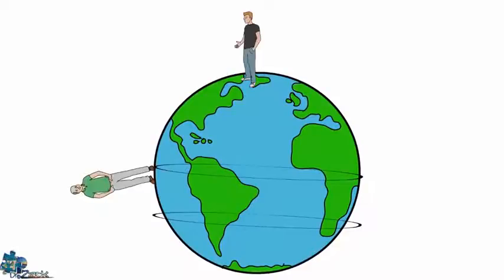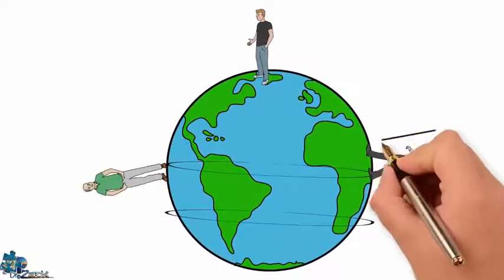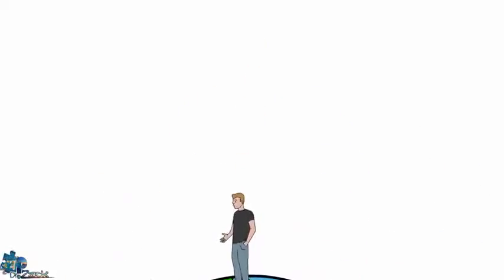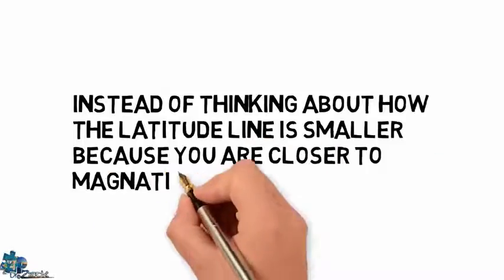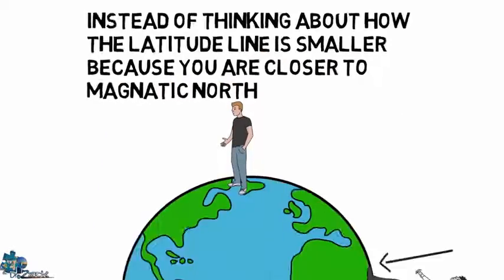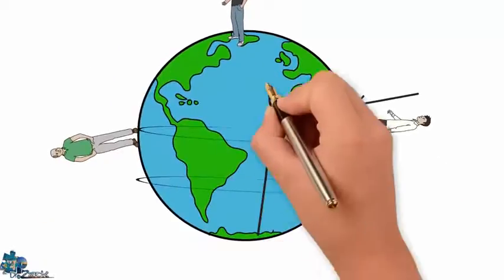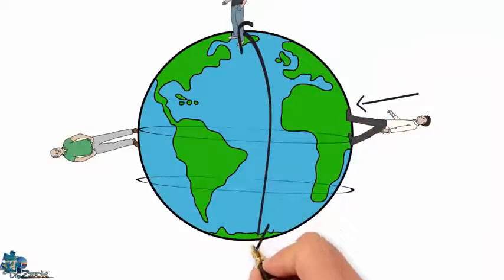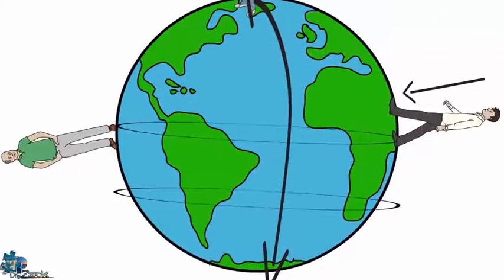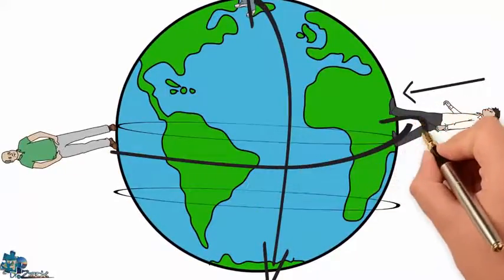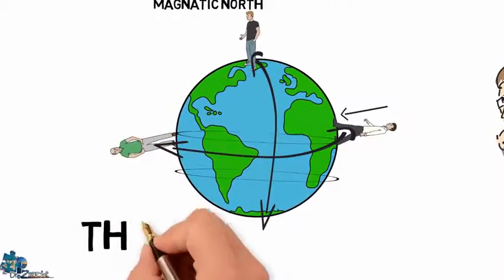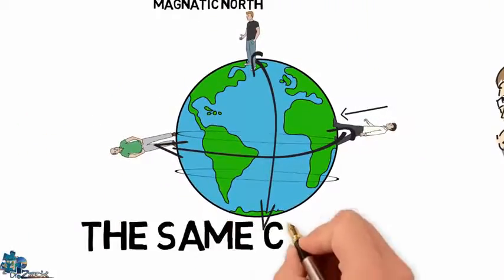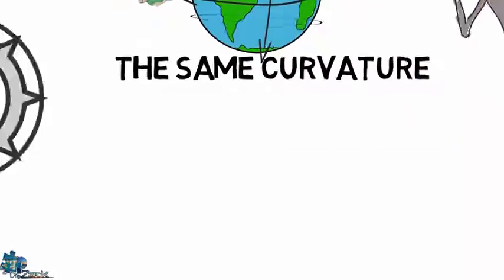This has nothing to do with how we see the Earth from our perspective in real life. Your perspective does not change no matter where you stand on the Earth's surface. You will always be perpendicular to the ground. Instead of thinking about how the latitude line is smaller because you are closer to magnetic north, think of your feet marking the point of your own personal equator. No matter where you walk, your equator is always going to be directly under you, cutting the globe in half. Therefore you will always see the same curvature or lack thereof.